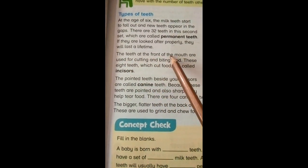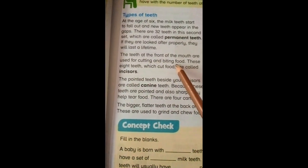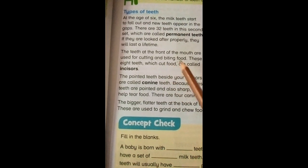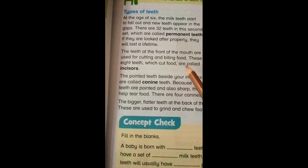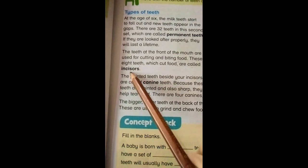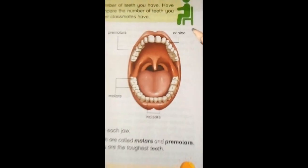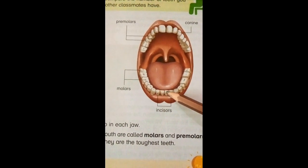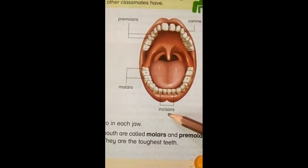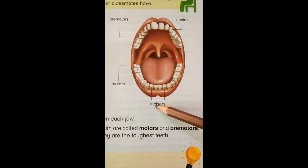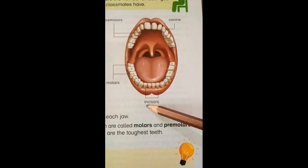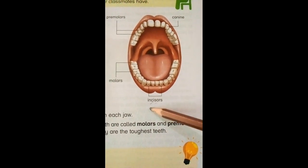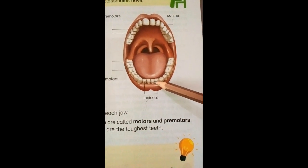The teeth at the front of the mouth are used for cutting and biting food. These 8 teeth — 4 in the upper jaw and 4 in the lower jaw — which cut food are called incisors. As shown in the diagram, incisors are found at the front of the mouth and are used to cut food.